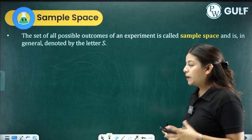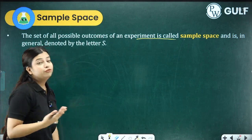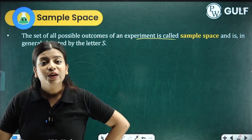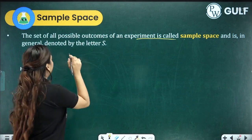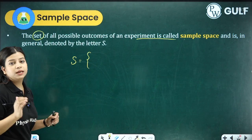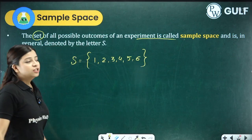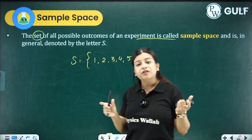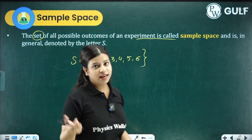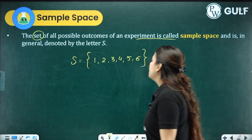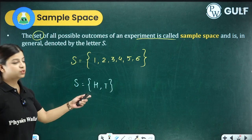The next we have is sample space. The set of all possible outcomes in the experiment is called the sample space. For example, if I have to write the sample space for throwing a dice, I know only numbers 1, 2, 3, 4, 5, 6 can come. We represent a set in a curly bracket, so the sample space is {1, 2, 3, 4, 5, 6}. Similarly, the sample space for tossing a coin is {Head, Tail}.